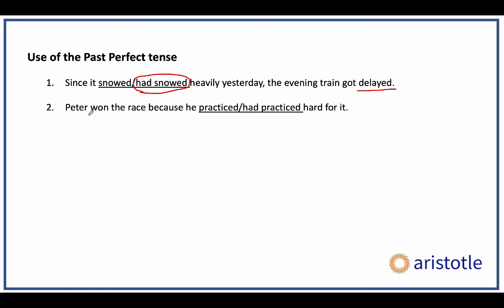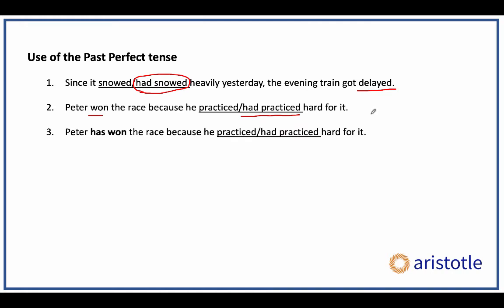'Peter won the race' is simple past. He must have practiced before that, so the practice is the earlier of the two past events — again, 'had practiced' is correct. But if I change the sentence to 'Peter has won the race' — present perfect — then the answer becomes 'because he practiced hard for it,' because now only one thing is happening in the past, which is the practice.